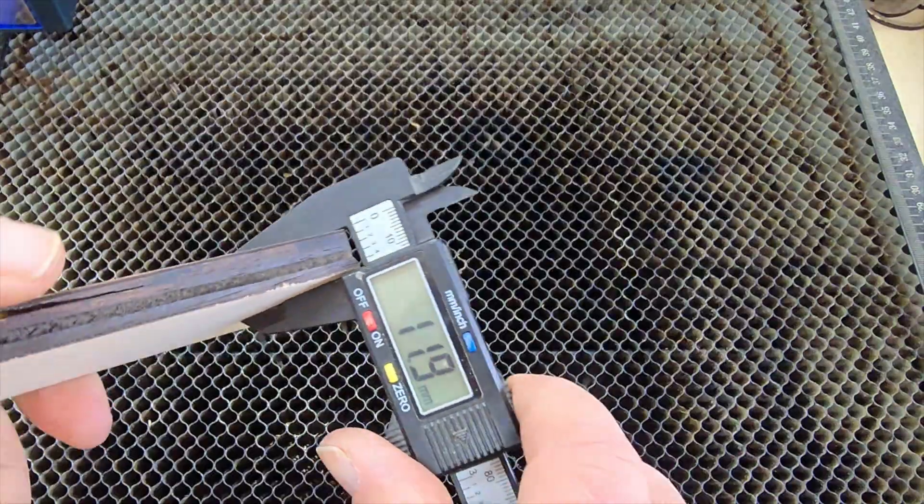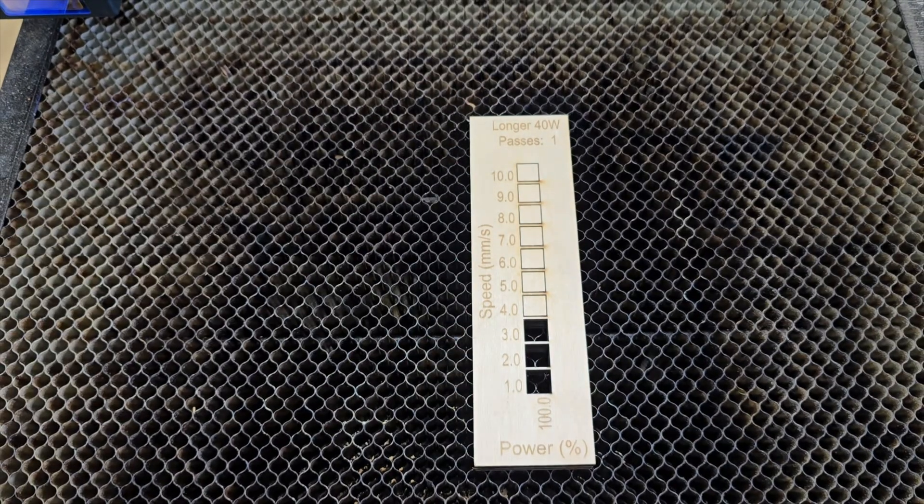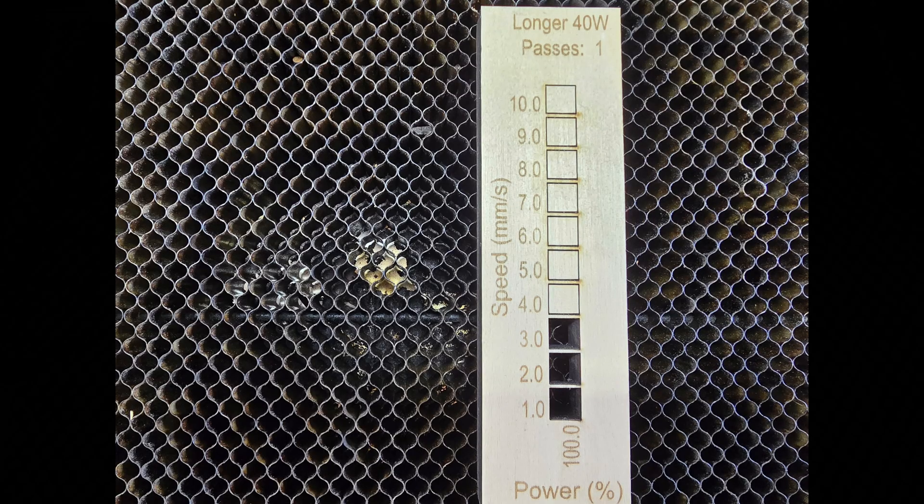This is half inch birch. When we're getting into half inch birch, we're talking about really making something substantial, but yet we're able to cut this with precision, and it's just absolutely fabulous. I can still cut this at three millimeters a second.